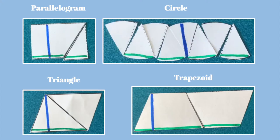Alright guys, in this activity we discovered how to find areas of four different shapes: parallelograms, circles, triangles, and trapezoids. I really hope you all learned a lot by doing this activity, and now understand where these formulas come from.